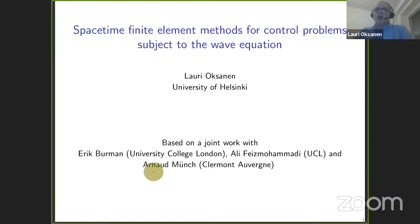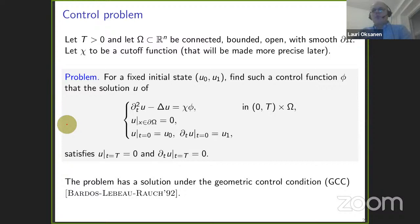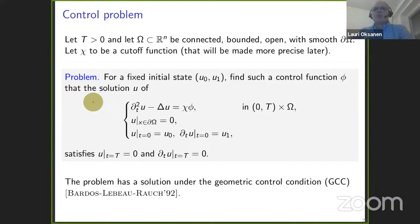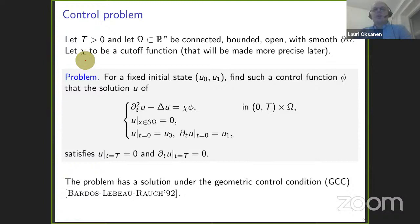So this is the problem I will focus on — what you often call a distributed control problem for the wave equation. We can also extend these results to the case of boundary control, but that is more technical and the results are less clean. So in this talk, I want to focus on this distributed case. The problem is posed on a spatial domain called omega — connected, bounded, open, with smooth boundary. There will be a cutoff function chi that localizes the control to some smaller subset of omega.